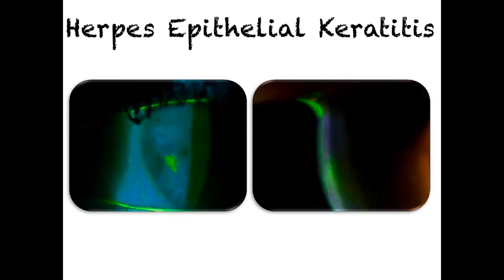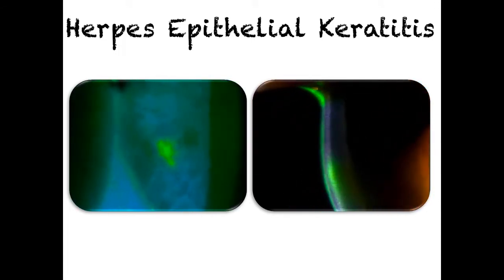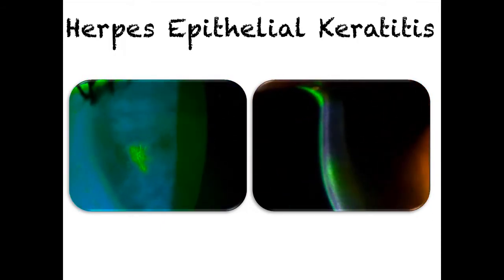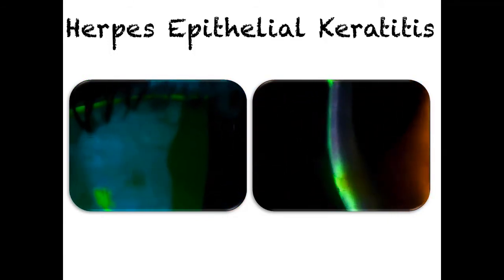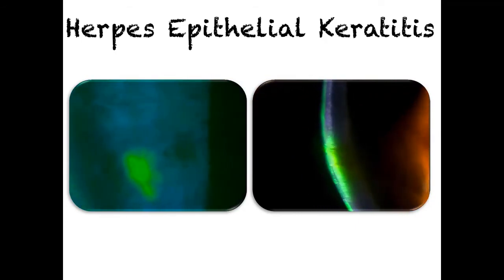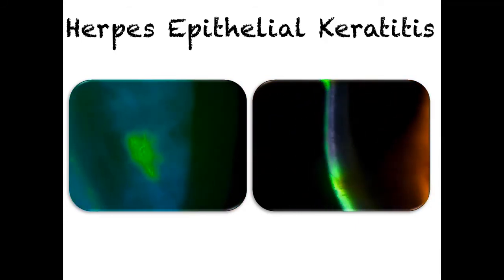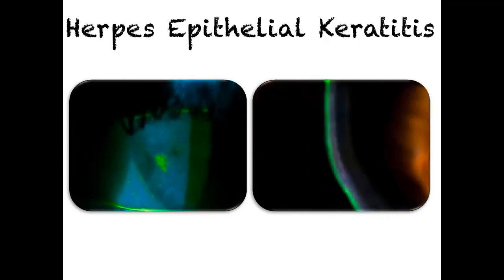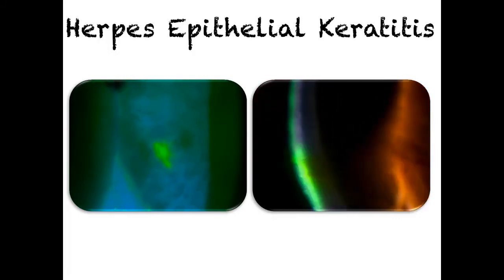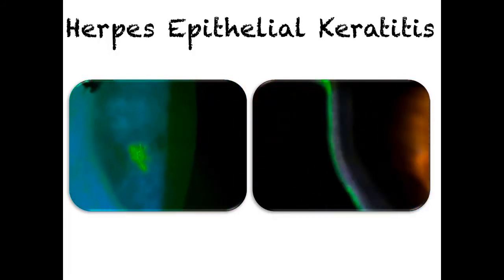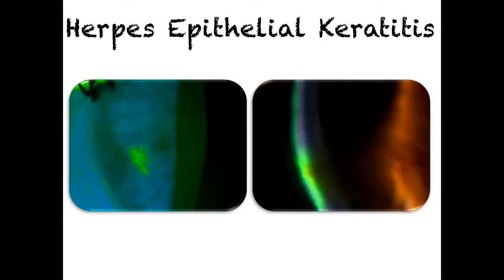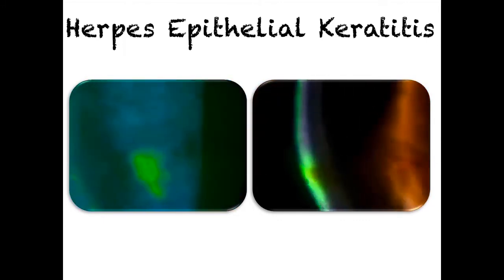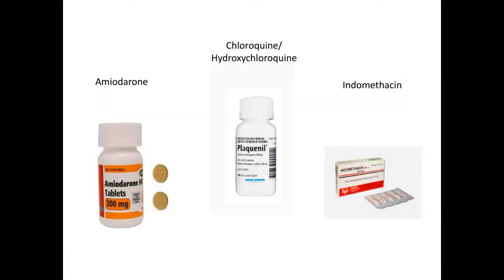An active herpetic epithelial keratitis lesion is much different from those scars. What you see here are lesions that actively stain with fluorescein — on the left, you can easily see the classic dendrite staining with fluorescein, along with the halo of fluorescein around it, which occurs because the surrounding epithelium is loosened. On the right, a cross-section through the cornea shows fluorescein permeating into deeper areas. Again, this will not be seen with vortex keratopathy.